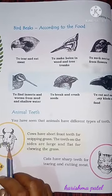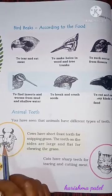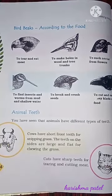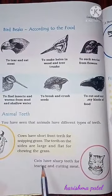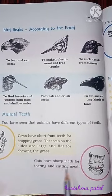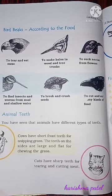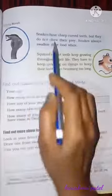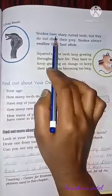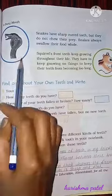The cow's side teeth are large and flat for chewing grass. Next, the cat. Cats have sharp teeth for tearing and cutting meat. They do not chew their prey.